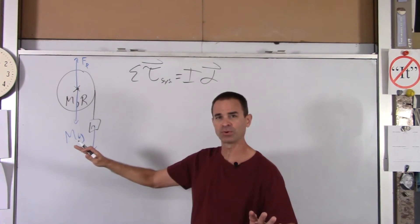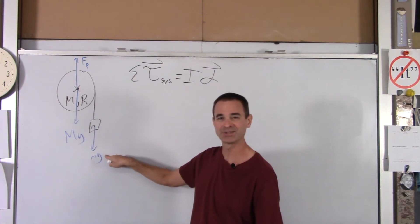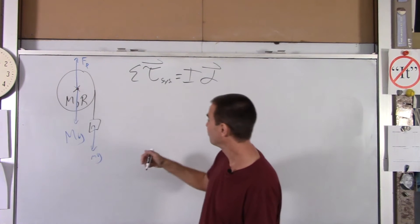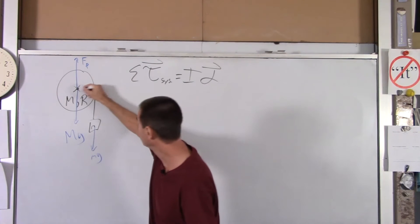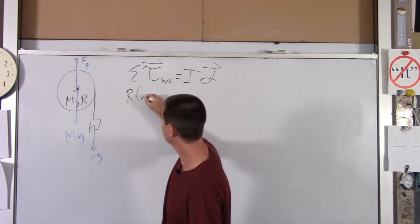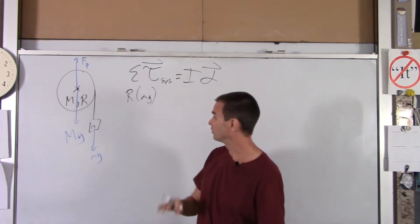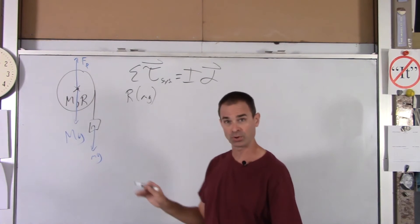So torque is force times radius, or radius cross force. So the radius is just R. And then the force is mg. That's the entire external torque acting on your system.